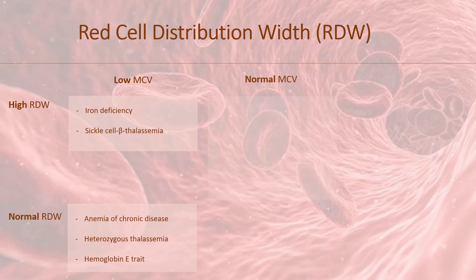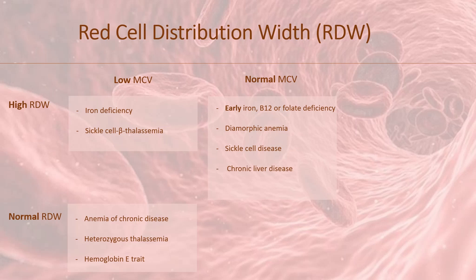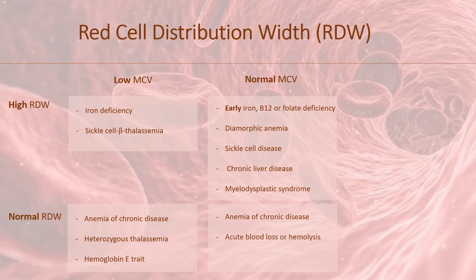If MCV is normal and there is high RDW, the possible diseases are early iron, vitamin B12, or folate deficiency, dimorphic anemia — for example iron and folate deficiency — or sideroblastic anemia, sickle cell disease, chronic liver disease, and myelodysplastic syndrome. Normal MCV and normal RDW combination may point toward anemia of chronic disease, acute blood loss or hemolysis, and anemia of renal disease.